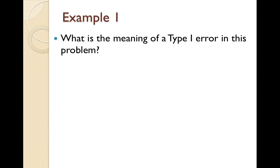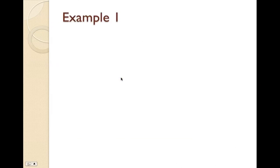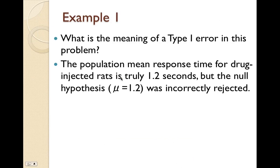What's the meaning of a type 1 error in this problem? Go back to the chart: the column header says the null hypothesis is true — the population mean is truly 1.2 seconds — but we rejected it. So a type 1 error means: the population mean response time for drug-injected rats is truly 1.2 seconds, but the null hypothesis was incorrectly rejected. Having the chart pre-made makes interpreting these errors much easier.